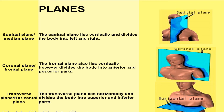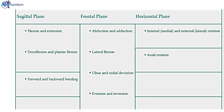The sagittal plane is also known as the median plane, which lies vertically and divides the body into left and right. The coronal plane, also known as the frontal plane, lies vertically but divides the body into anterior and posterior parts. The transverse plane, also known as the horizontal plane, lies horizontally and divides the body into superior and inferior parts. In the table, you can see movements occurring in various planes: in the sagittal plane — flexion, extension, dorsiflexion, plantar flexion, and forward and backward bending. In the frontal plane — abduction, adduction, lateral flexion, ulnar and radial deviation, and eversion and inversion. In the horizontal plane — internal and external rotation and axial rotation.